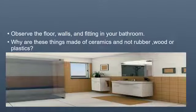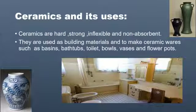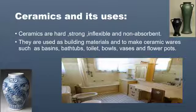The next topic is ceramic. Observe the floor, walls, and fittings in your bathroom — what are these things made of? Ceramics. Not rubber, wood, or plastic. Because ceramics are hard, strong, inflexible, and non-absorbent, they are used as building materials and to make ceramic ware such as basins, bathtubs, toilet bowls, washbasins, and flower pots.